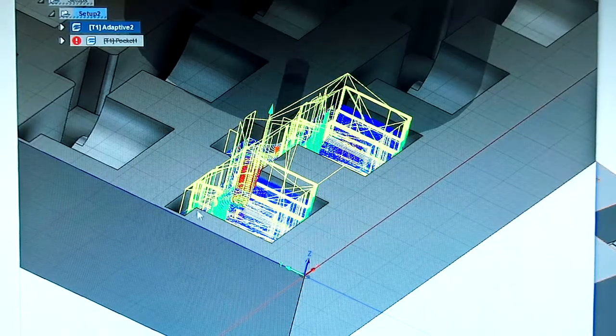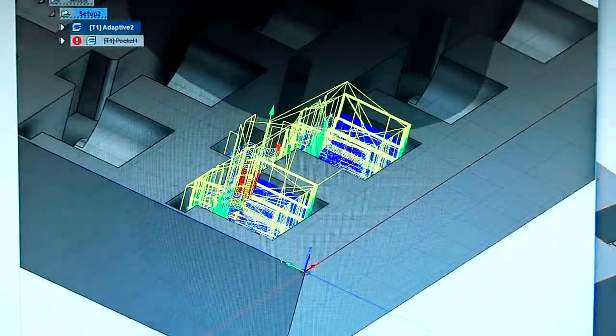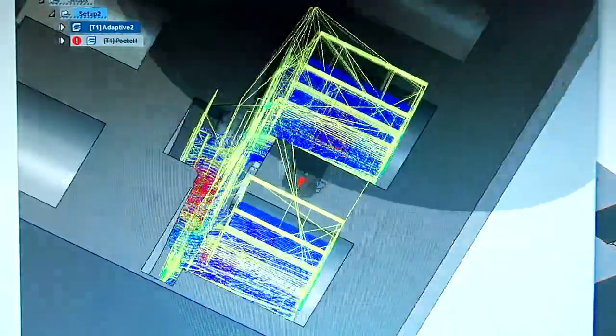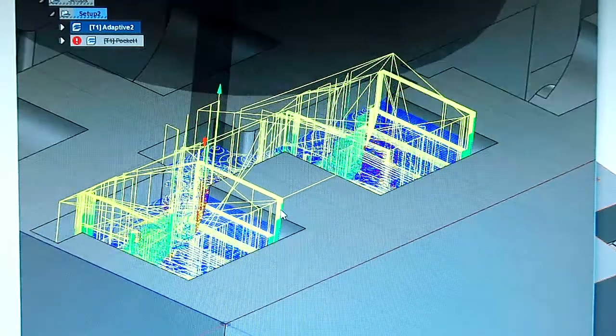So once you specify all that, it generates this tool path for you. And it took longer to do than I thought it was going to. It took probably 15 minutes for it to process before it came up with this. So now we're going to try and actually cut this thing for the first time.